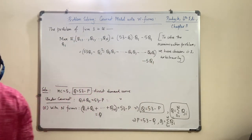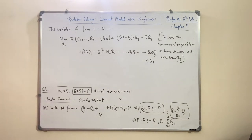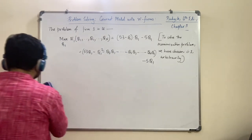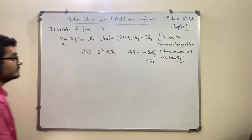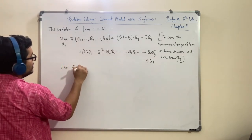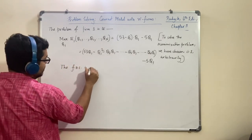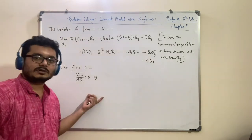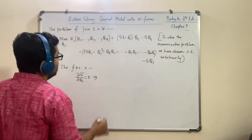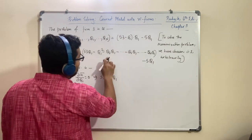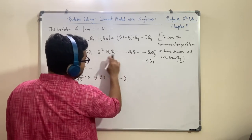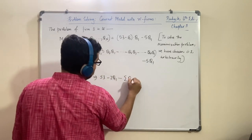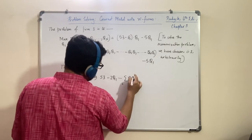As N becomes infinitely large, let's write it down mathematically — it's pretty easy. Limit as N tends to infinity of P star equals limit as N tends to infinity of (5N + 53) / (N+1). Dividing numerator and denominator by N, we have (5 + 53/N) / (1 + 1/N). Putting infinity here, these two terms — 53/N and 1/N — become zero, so we get 5.